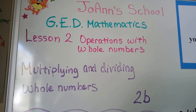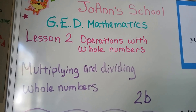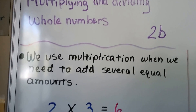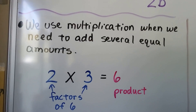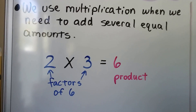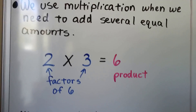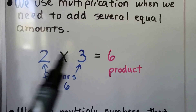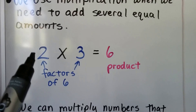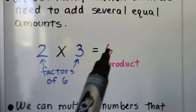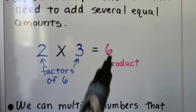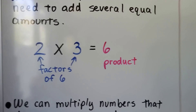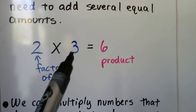We're at lesson 2b and we're going to be multiplying and dividing whole numbers. We use multiplication when we need to add several equal amounts. So if we wanted to add three two times, we would do two times three. These are the factors and that's the product. They're also called multiplicands, but think of them as factors.